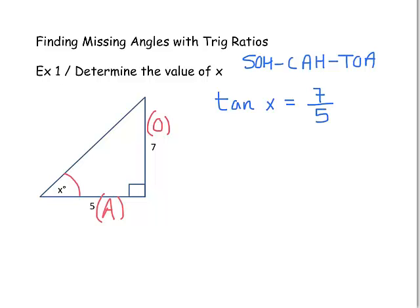So we've just created an equation. There's only one unknown, but the unknown this time is an angle — our goal here is to solve for an angle. Now to get x by itself, there's no such thing as dividing by tangent on both sides — it would be like dividing by square root on both sides. However, the good news is that we can use the inverse of tangent on both sides of this equation.